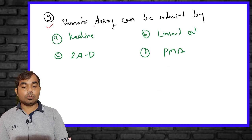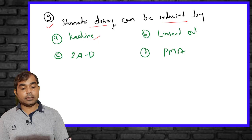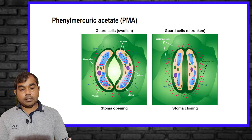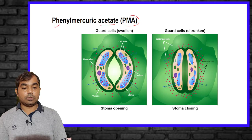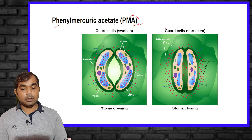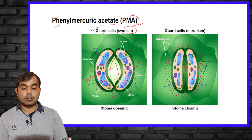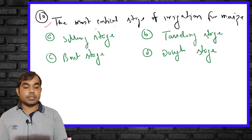The ninth MCQ asks: stomatal closing can be induced by which substance — kaolin, linseed oil, 2,4-D, or PMA? The right answer is PMA — Phenyl Mercuric Acetate. PMA induces the closing of stomata. When guard cells are swollen, stomata are open and water is lost through transpiration; PMA causes guard cells to close the stomatal pore.